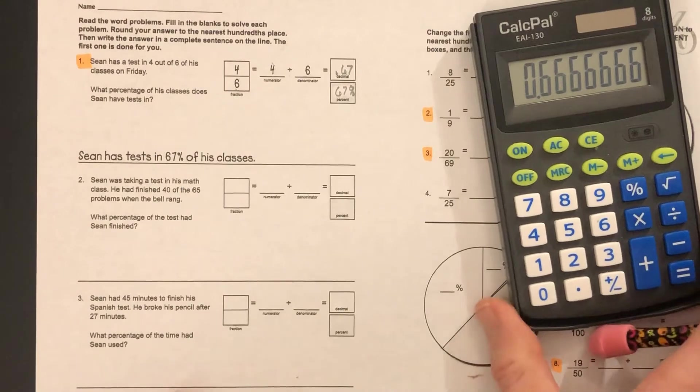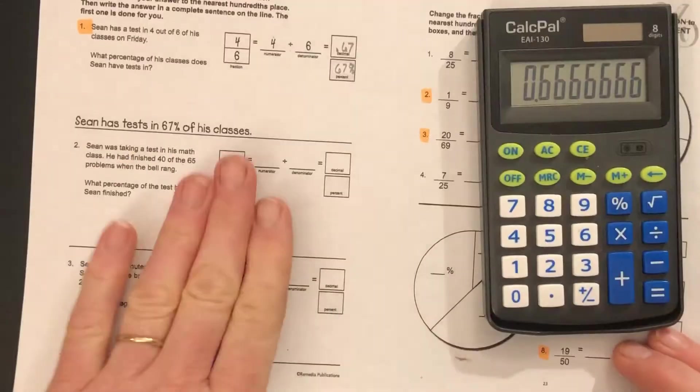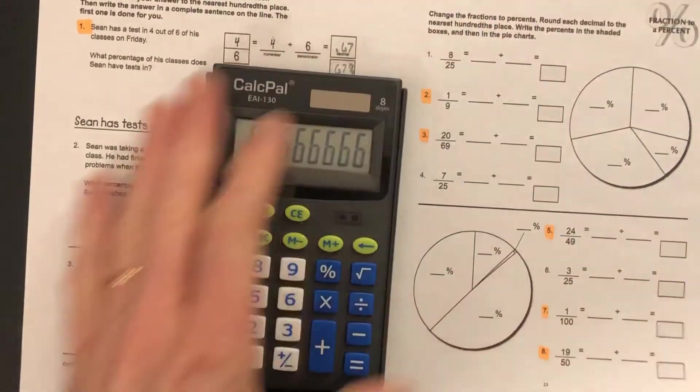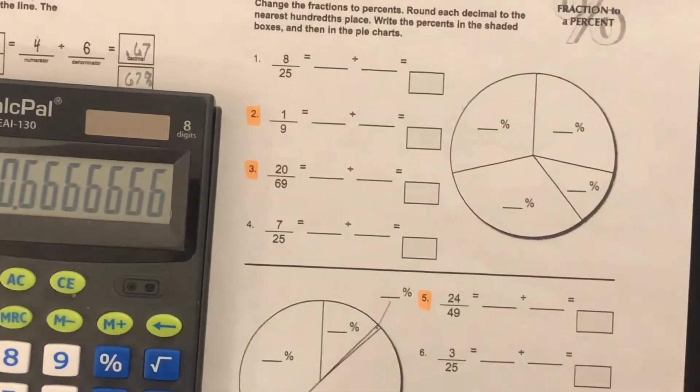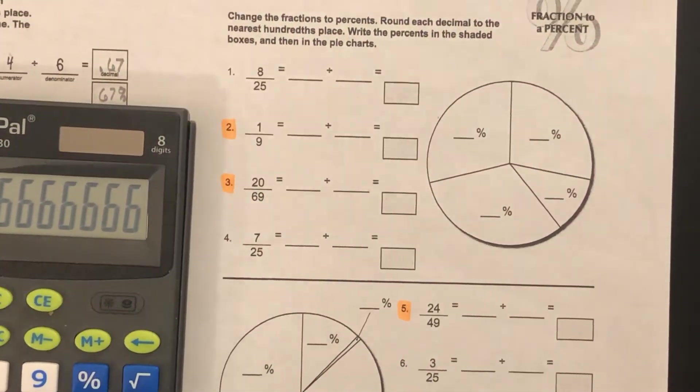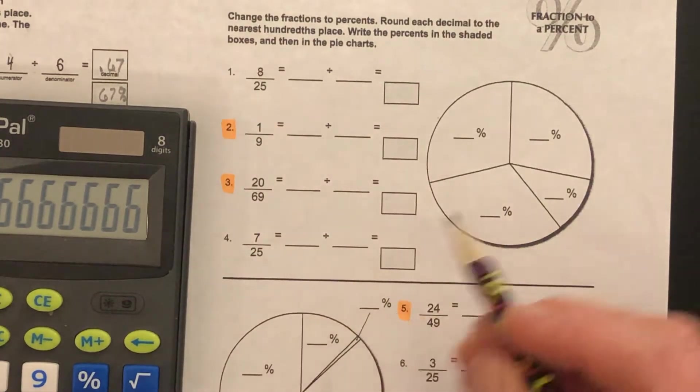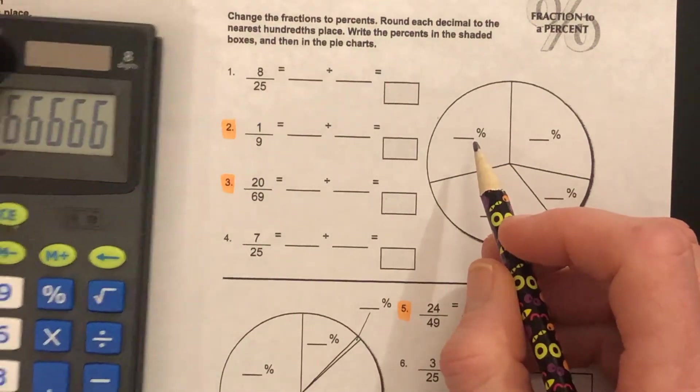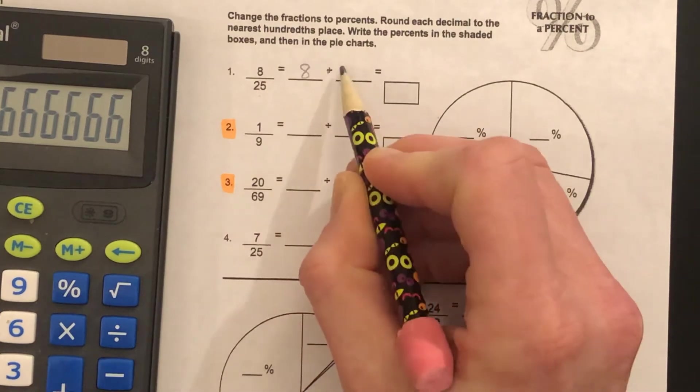Now we're going to look at circle graphs and determine the percent of each one. One of these is 8/25. Remember how this is also division: 8 divided by 25. This one is 1/9. Remember it's also division: 1 divided by 9. Take the calculator and divide it out.